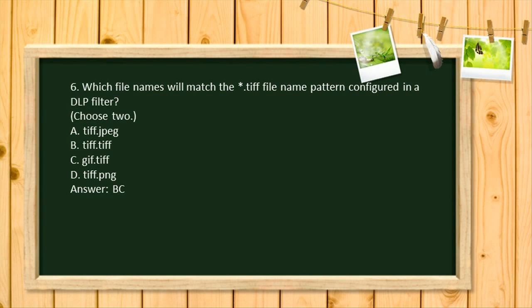Question 6. Which file names will match the asterisk.TIFF file name pattern configured in a DLP filter? Choose 2. A. TIFF.JPEG. B. TIFF.TIFF. C. GIF.TIFF. D. TIFF.PNG. Answer: B, C.